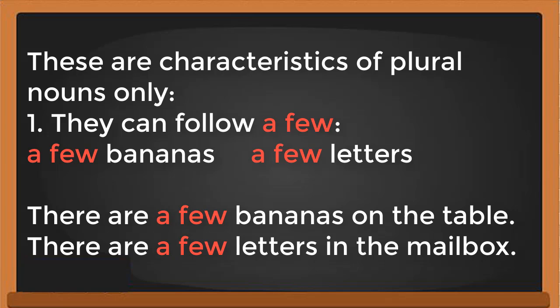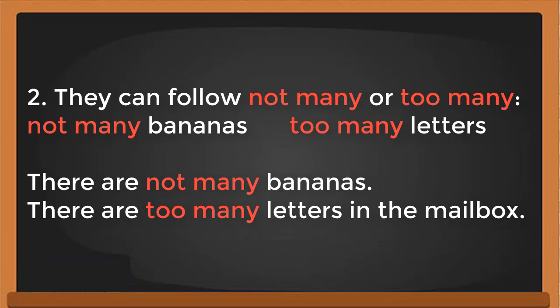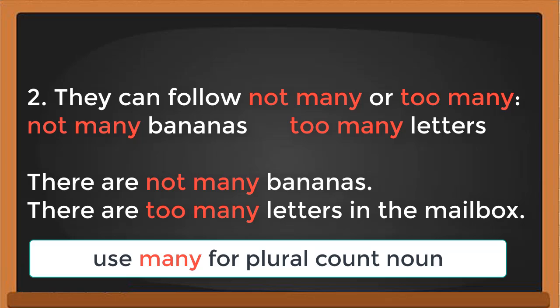These are characteristics of plural nouns only. Plural nouns can follow 'a few'. For example: 'a few bananas', 'a few letters' — for count nouns only. If the noun is non-count, use 'a little' instead. Plural nouns can also follow 'not many' or 'too many'. For example: 'not many bananas', 'too many letters'. In conversation: 'There are not many bananas', 'There are too many letters in the mailbox'. Use plural form with 'not many' and 'too many'.